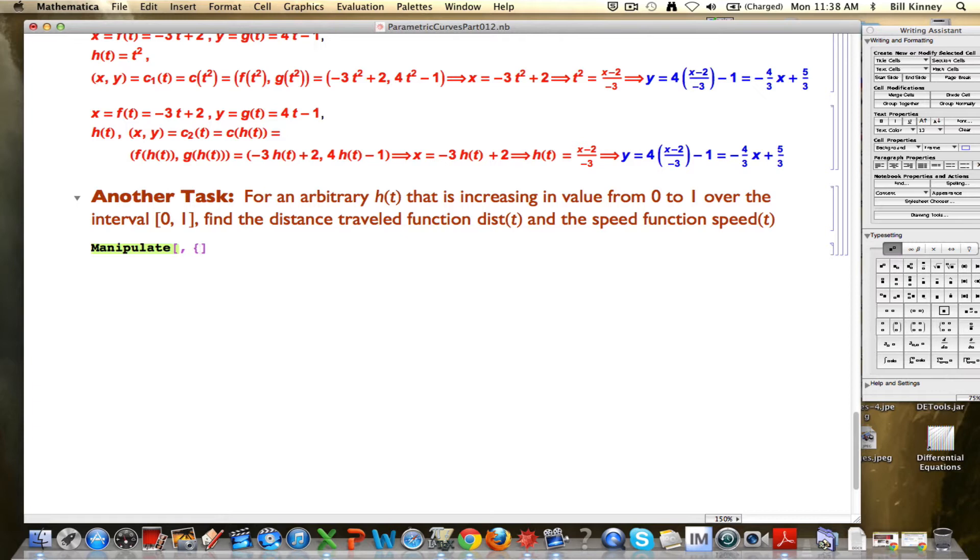Manipulate is Mathematica's animation command. I've been typically calling the animation parameter b. It's going to be the right end point of the interval over which I'm plotting this. I'll start it out just barely bigger than 0 and go up to 1. Let's also put the h of t here. I'm going to start out with a simple h of t, h of t equals t.